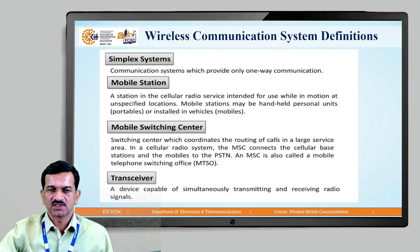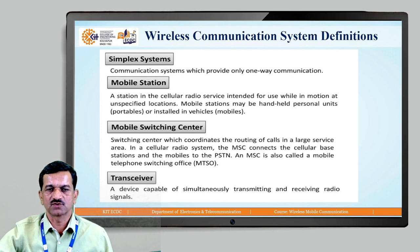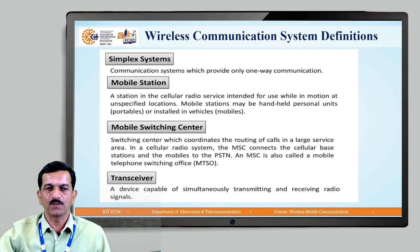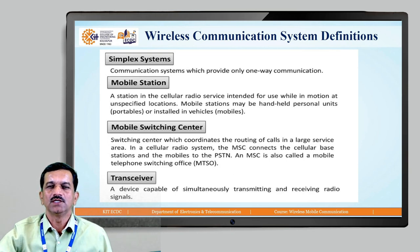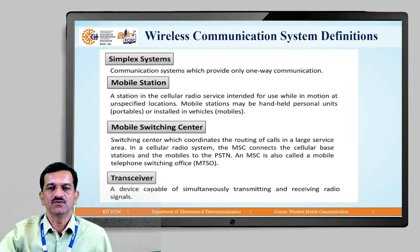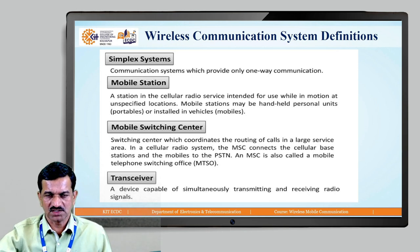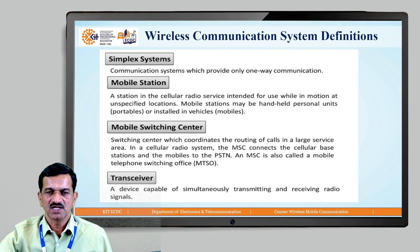Simplex is a communication system which provides only one-way communication — that is nothing but simplex communication. Regarding mobile stations, every subscriber has a handheld equipment which is used for transmission and reception purposes — that is the mobile station, or a station in the cellular radio service intended for use while in motion at unspecified locations. Mobile stations may be handheld personal units, portable, or installed in a vehicle. These handheld stations are the mobile stations.